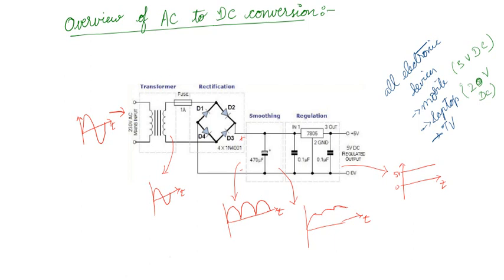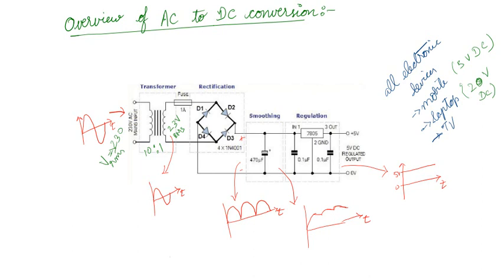We know a transformer is a passive device which will step up or step down the voltage. I have 230 volt AC — this is your RMS value. Suppose I am using a 10-to-1 transformer, meaning I have 10 times more turns in the primary compared with the secondary. If I have 100 turns in the primary, I will have only 10 turns in the secondary. This sort of transformer is called a step-down transformer. So 230 volt RMS will be stepped down to 23 volt RMS.